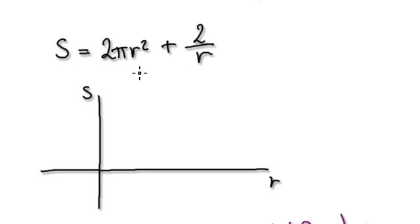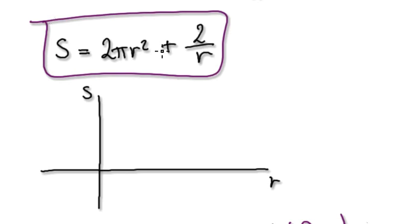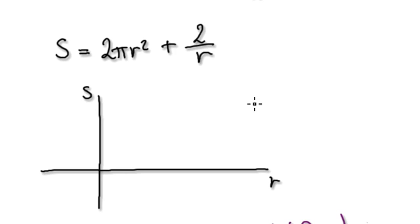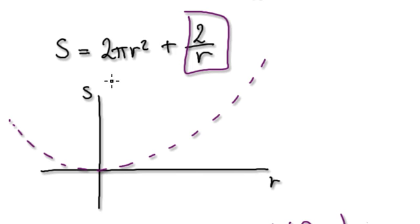When R is big, it wants to do a positive quadratic, so it wants to do something like this. And when R is small, this term here dominates, so it wants to do a positive reciprocal. Merging the two together will give you something like this.